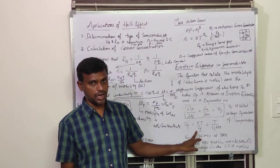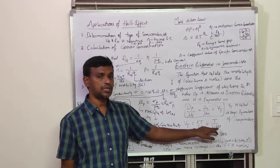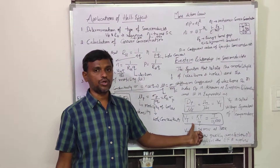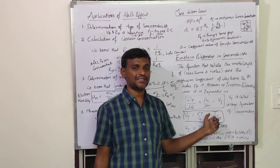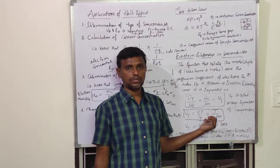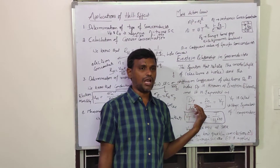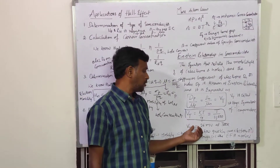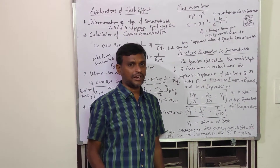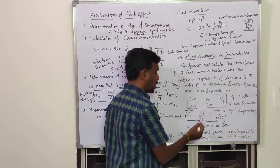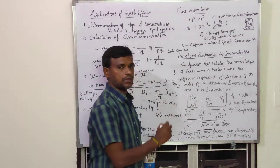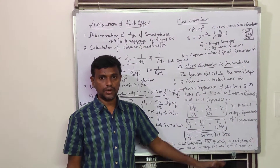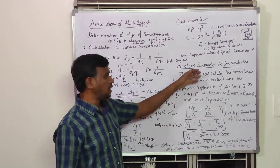Substituting the values of k and q into VT = kT/q gives VT = T/11,600. At room temperature (300 K), this evaluates to VT = 26 millivolts. So the voltage equivalent of temperature at 300 K is 26 mV.